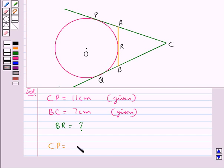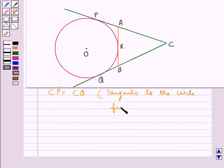Now CP would be equal to CQ as these are the tangents to the circle from point C, and we know that the lengths of the tangents from an external point to a circle are equal. So we have CP is equal to CQ. Now since we have CP is equal to 11 cm, this means that CQ is also equal to 11 cm.